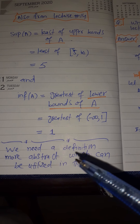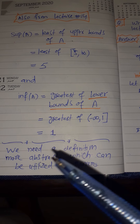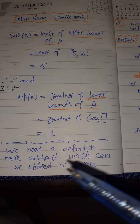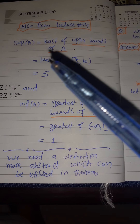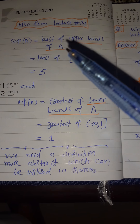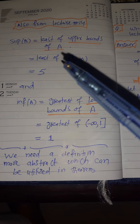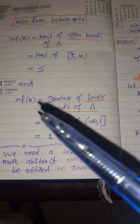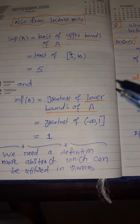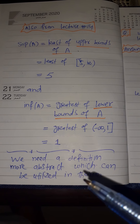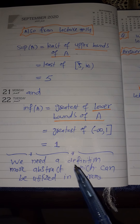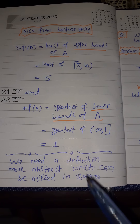Now we need a more abstract definition which can be utilized in theorems. We have a definition for supremum as the least of upper bounds, and infimum as the greatest of lower bounds. But we need a more abstract sort of definition which can be used in theorems and which is more applicable.